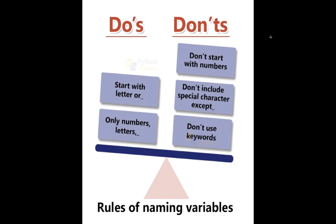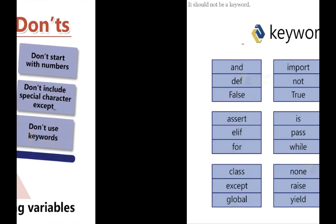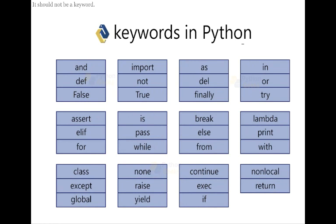Do not start with numbers, do not use special characters except underscore, and do not use keywords. Only use numbers, letters, and underscores. Here are some Python keywords to memorize: and, def, false, import, not, true, as, del, finally, in, or, try, assert, elif, if, for, is, pass, while, break, else, from, lambda, print, with, class, except, global, none, raise, yield, continue, exec, nonlocal, and return.